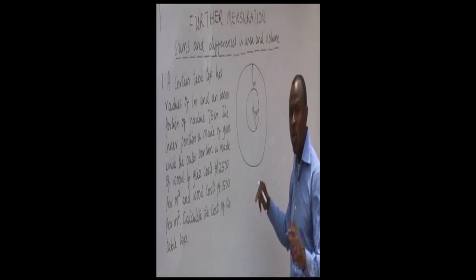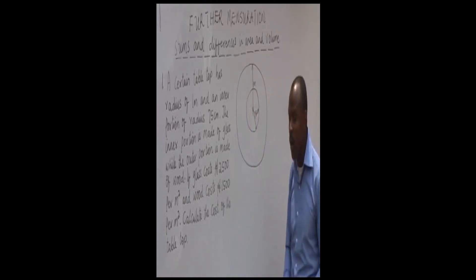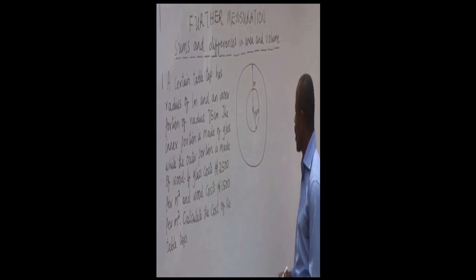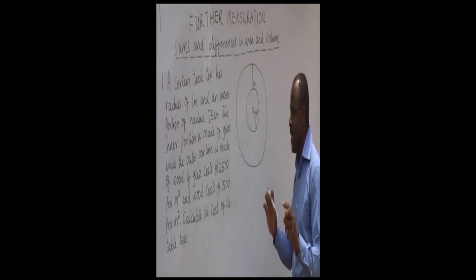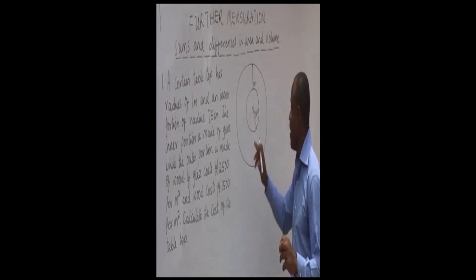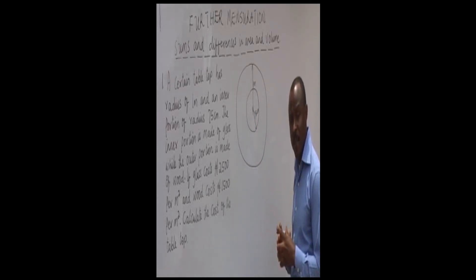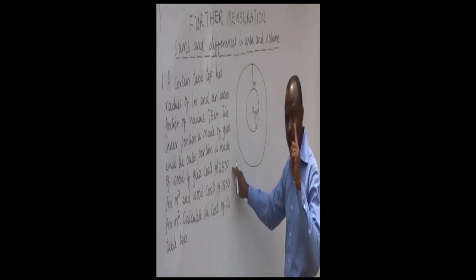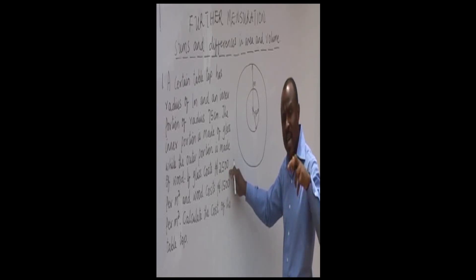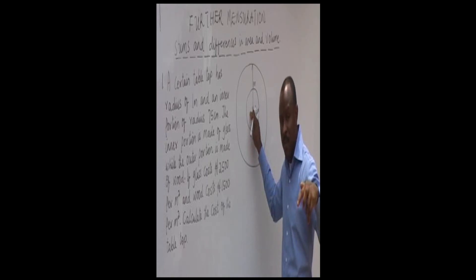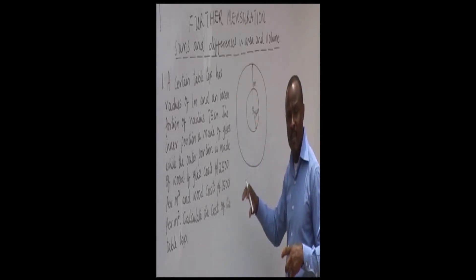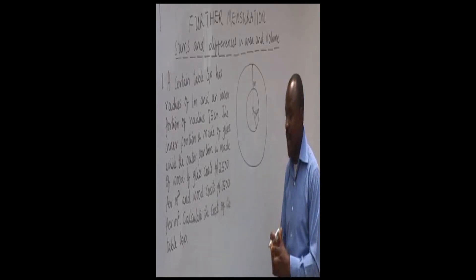You can either change meters to centimeters or centimeters to meters — since answers are required in meter squared, change centimeters to meters. We will calculate the area of the glass and the area of the wood separately. Then for each area we find the equivalent cost in Naira by proportion, and finally add the two costs together to get the total cost of the table top.